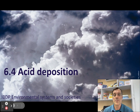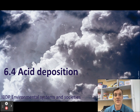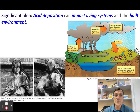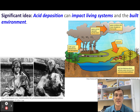Welcome everyone to today's video about IBESS topic 6.4: acid deposition. Today we're going to learn about acid deposition, which is a form of air pollution that affects soil, water, and living organisms. The first big idea you need to remember is that acid deposition — often called acid rain, even though it's not always rainfall — can impact living systems and our built environment.